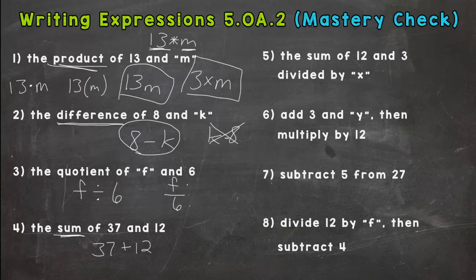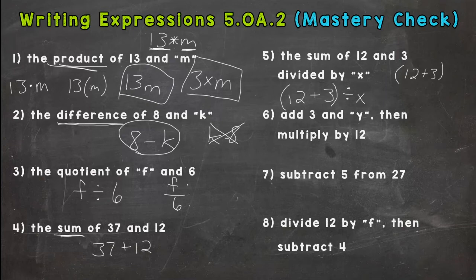Number 5, the sum of 12 and 3 divided by X. So we need the sum of 12 and 3 first, so sum 12 and 3, and we are doing that first, so we want to put it in parentheses. That tells us we have to do that first, and we divide it by X. Remember, fraction means division as well.